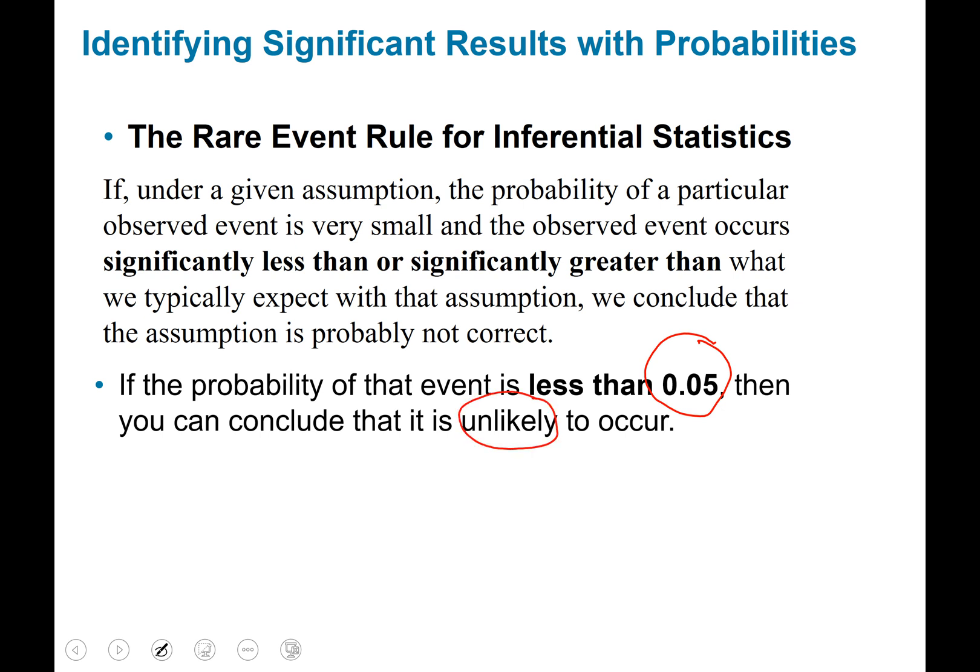You could think of it as a percent if you want to. If I move this decimal twice back making it into a percent, that would be five percent. So if an event has a five percent or less chance of occurring, you would call that unlikely.